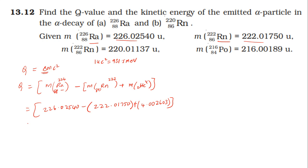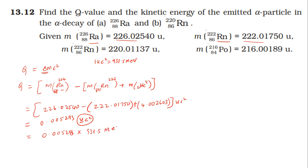So simply the mass defect comes out to 0.005297 U atomic mass units. Then into c-squared, using 931.5 MeV per atomic mass unit, we get the Q value.